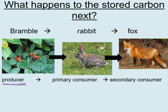Producers produce their own food. Consumers consume or eat food. The rabbit is a primary consumer — it's the first thing in the food chain that's doing the eating. The fox is therefore called a secondary consumer, as it's the second thing in the food chain that's doing the eating — it consumes the rabbit.